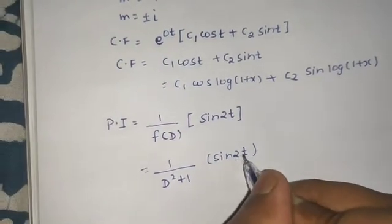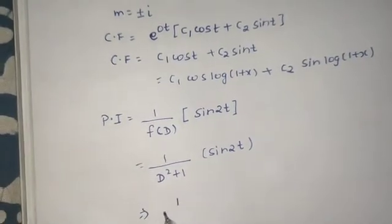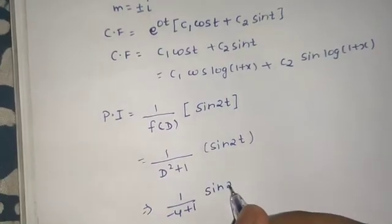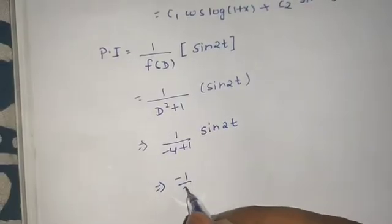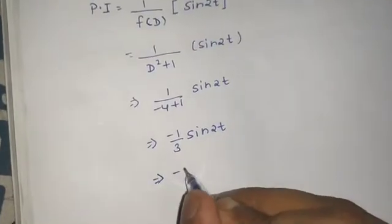What do we do? 2 here is a, a² is 4, and minus of that is -4 + 1, and here we have sin(2t). So this is -1/3 * sin(2t).